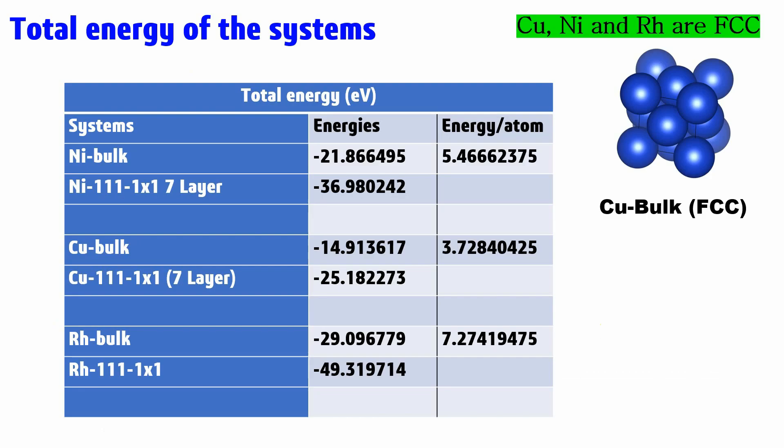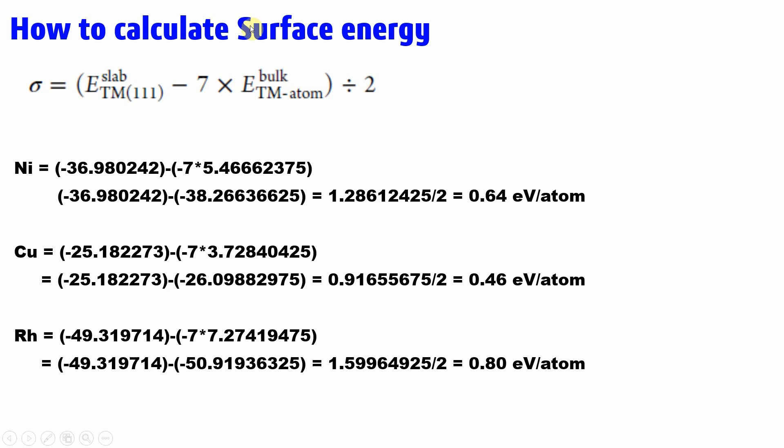This is the calculated total energy of the systems. This is nickel bulk energy, this is the nickel (111) 1x1 seven layer energy. The bulk system contains four atoms. Divide the total energy by four and you will get the per atom energy, which you have to use for further calculation.